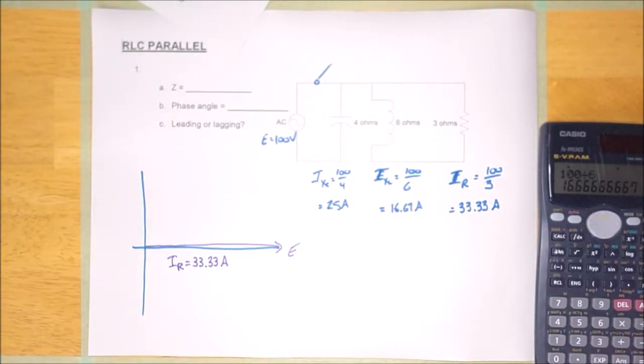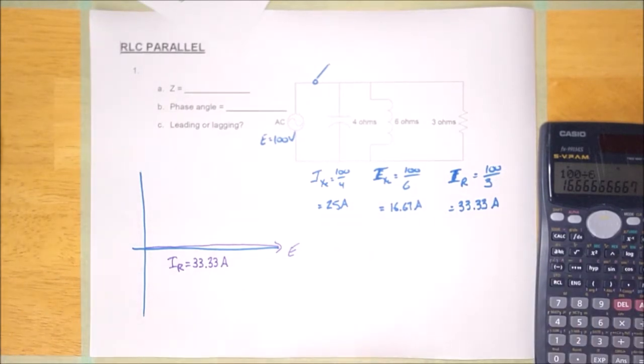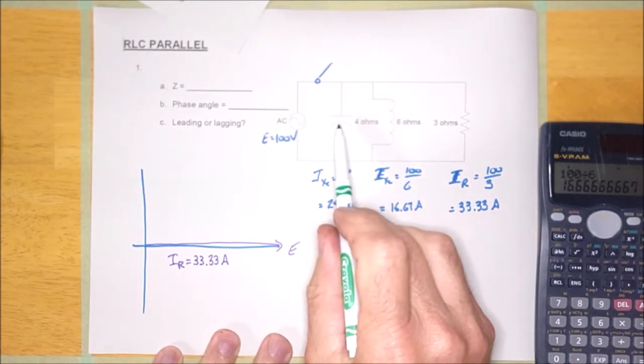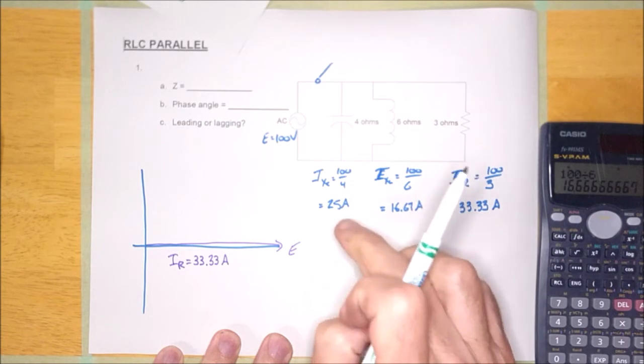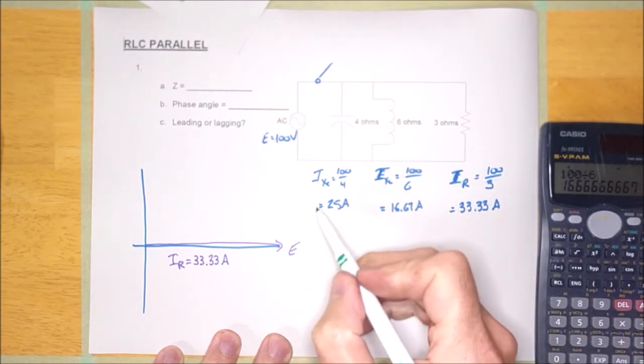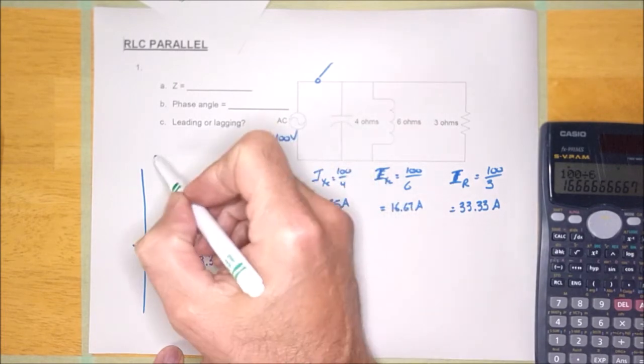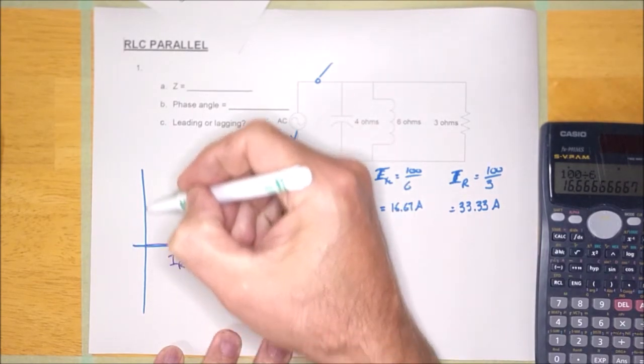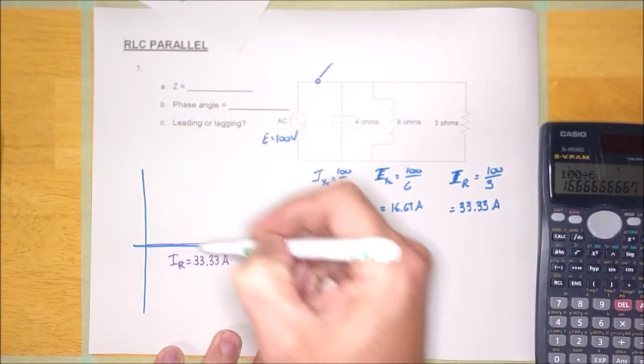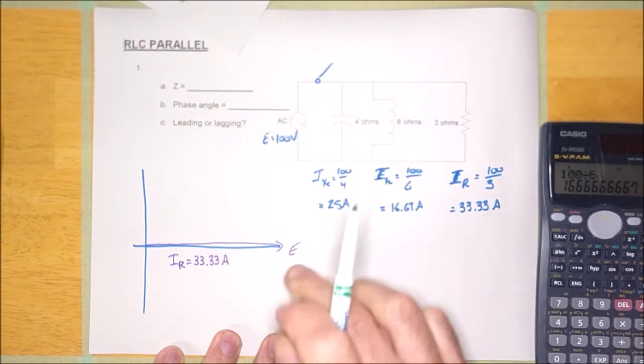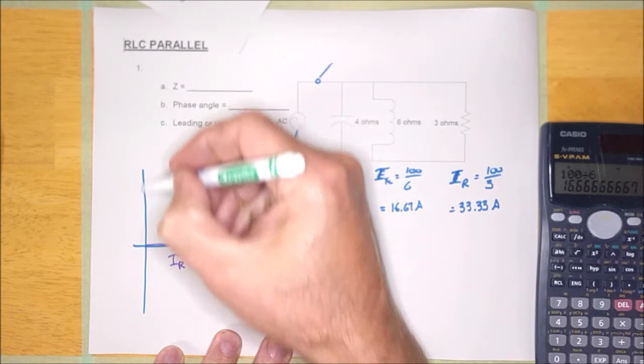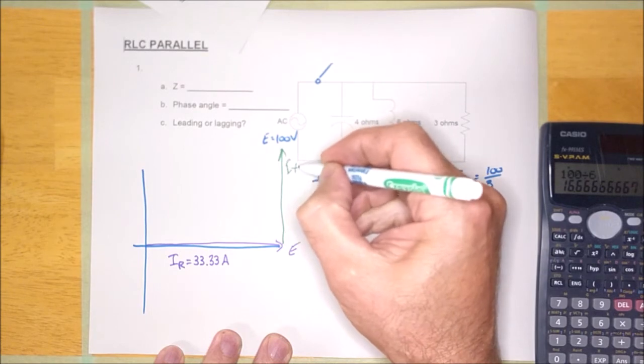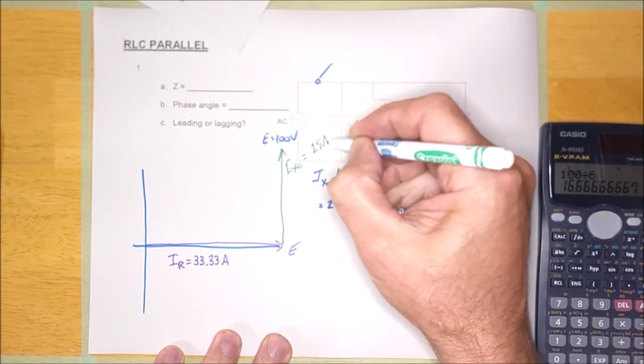And the next phasor we're going to draw is, I don't care which one, we can draw either one. So let's just draw this one first, IXC. Now it is a capacitor. Capacitors cause the current to lead, which means I must draw this current leading or counterclockwise from the voltage by 90 degrees. And if I were to draw that 25 amps leading, it would have to be counterclockwise. And I'm going to draw it tip to tail. It would sit here, but I'm going to move it right to there. So this is going to be IXC. It is going to be 25 amps.